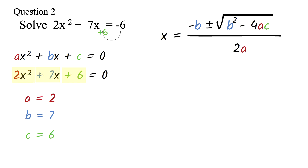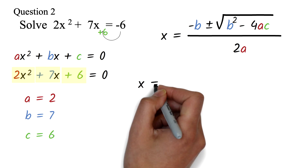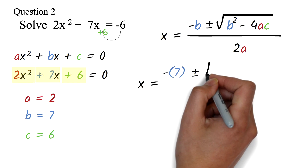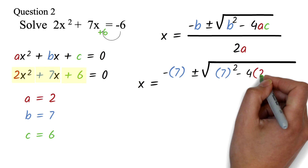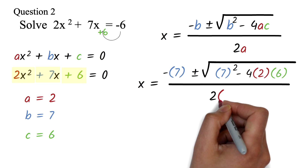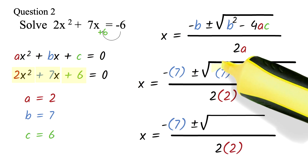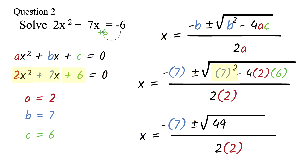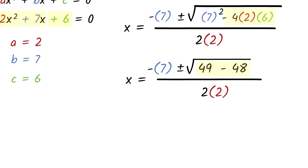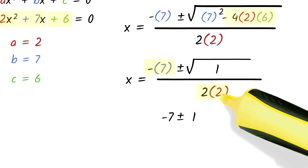We'll just replace each of the letters by their values. Please take note of the color code so you know where everything is coming from. We have x equals minus 7 plus or minus square root of 7 squared minus 4 times 2 times 6, all over 2 times 2. We work out what is under the root sign first. 7 squared is 7 times 7, which is 49. Minus 4 times 2 times 6 will be negative 48. So we add 49 minus 48 to get 1. The square root of 1 is 1. This part is simply negative 7. The 2 times 2 in the denominator will be 4.